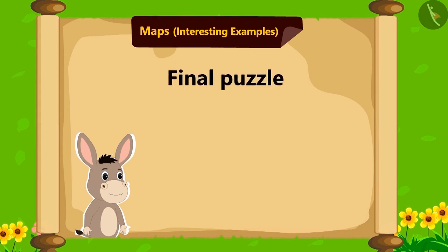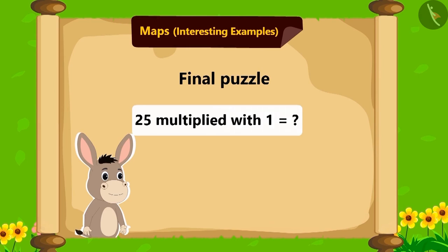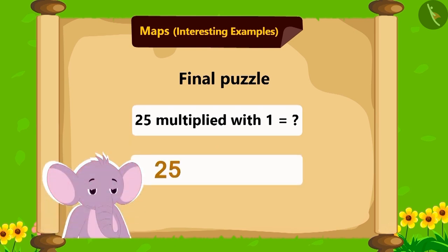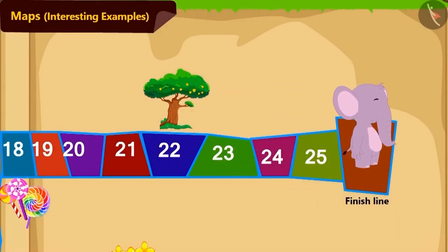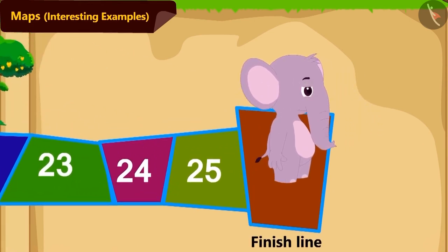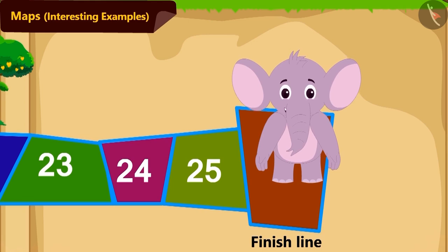Now Bholla asked his final puzzle: if you multiply 25 by 1, then what will you get? Children, do you know the answer? If we multiply any number by 1, we get the same number. Therefore, 25 multiplied by 1 is 25. On getting this answer, Appu ran to tile number 25, reached the finish line, and started jumping happily.